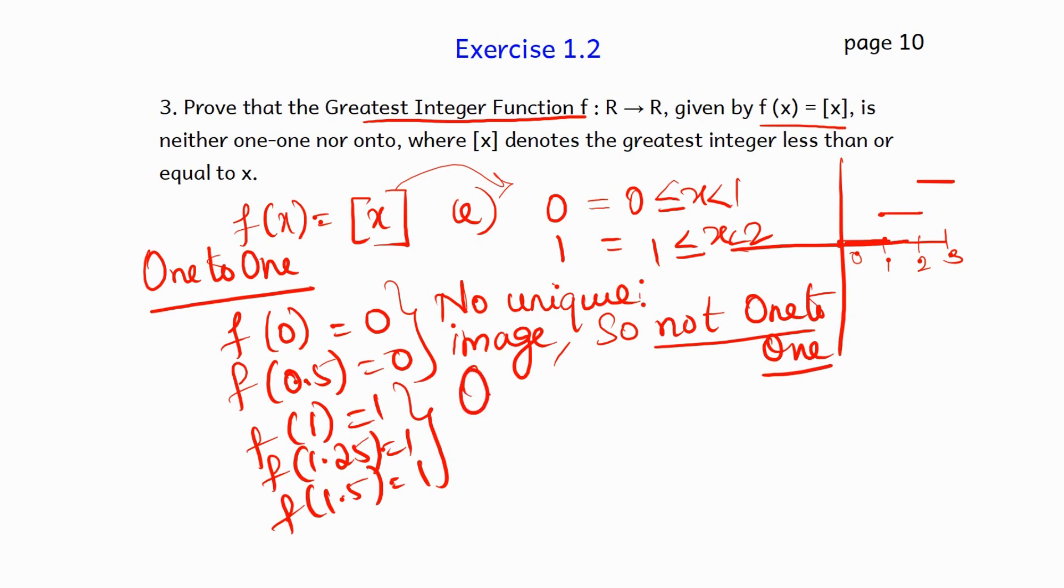To prove onto function, the given codomain is also a real function. Check the function given: R is mapped to R. So codomain is also a real number set. If I check the greatest integer function, the output of all the function will be an integer. All the real values in the codomain will not get mapped to this function. So it is not an onto function.